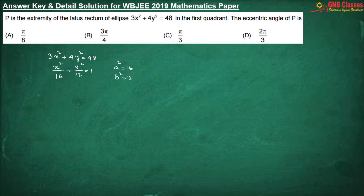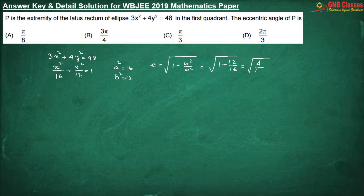Therefore, the eccentricity of the ellipse is √(1 − b²/a²), which gives √(1 − 12/16), coming to 1/2. Therefore, the eccentricity of the ellipse is 1/2.